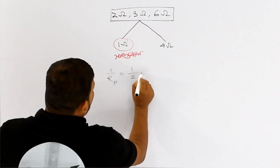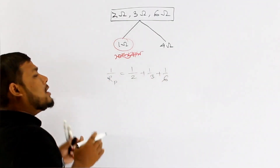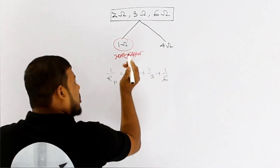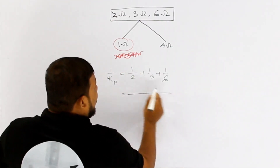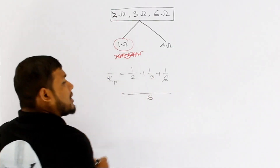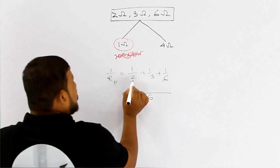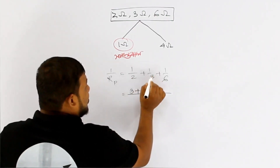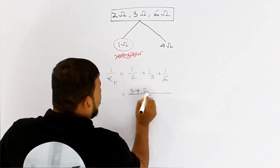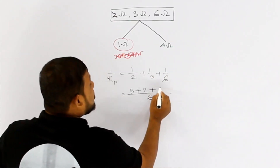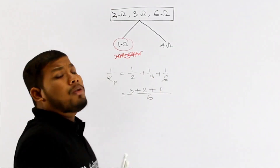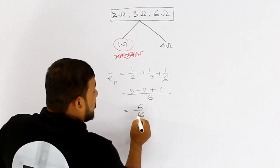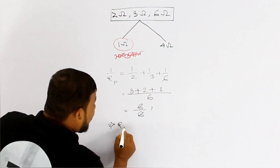So, 1 by R_P equals the formula: 1 by 2 plus 1 by 3 plus 1 by 6. The LCM of 2, 3, and 6 is 6. This gives us 3 plus 2 plus 1 over 6, which equals 6 over 6, which equals 1. This implies that R_P is equal to 1.